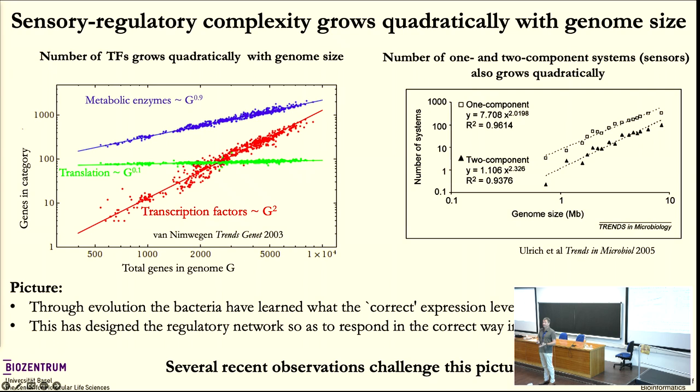The first thing I want to convince you of is that that picture cannot be correct. It cannot really work that E. coli has simply learned through evolution to sense where it is — whether it's in the gut of a human or in the sewer — and from that set its expression levels to what evolution taught it.